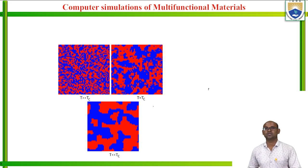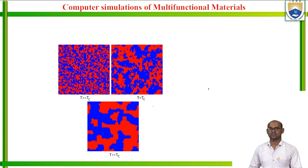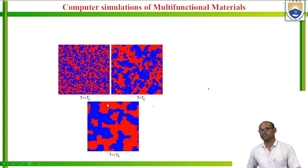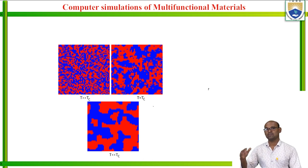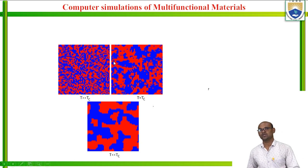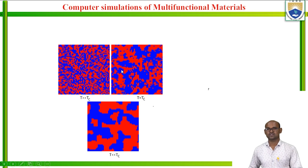Here I am showing computer simulation work of a magnetic material. If you take iron at high temperature, you will find that iron does not behave as a magnet. But as you cool it, you will find that iron will become a magnet. So there is a phase transition from paramagnetic to ferromagnetic state on cooling. Here I am showing three different pictures where the first one is T greater than Tc — Tc is the critical temperature for this second order phase transition.